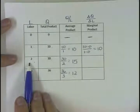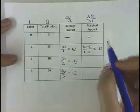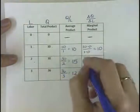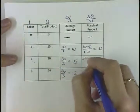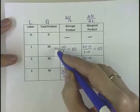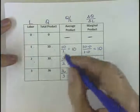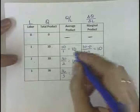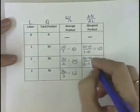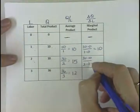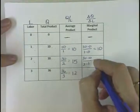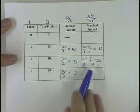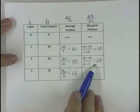Now we want to figure out what does the second unit of labor add to production. So we're going to take the change in Q, which is 30 minus 10, and divide by the change in labor, which is going to be 2 minus 1. So 30 minus 10 divided by 2 minus 1 is 20. This second unit of labor adds 20 units to production.